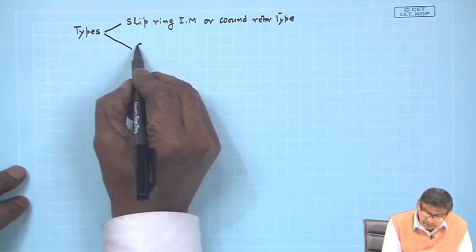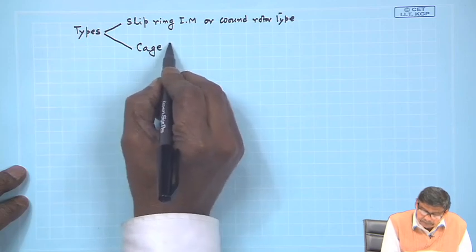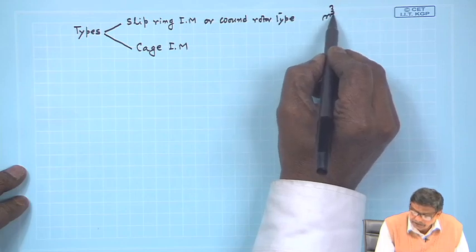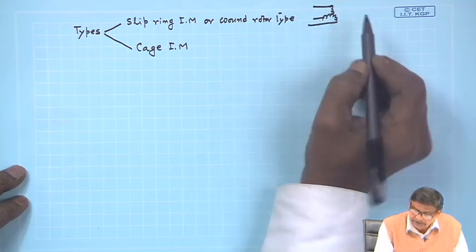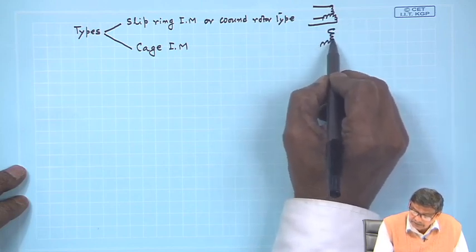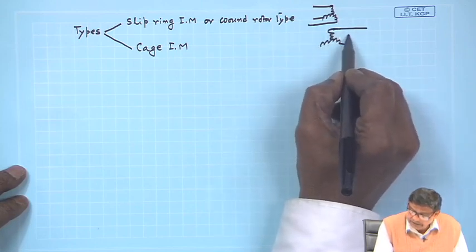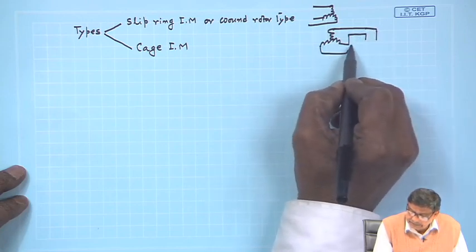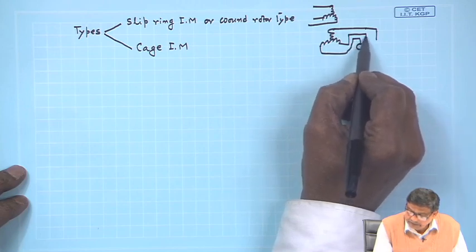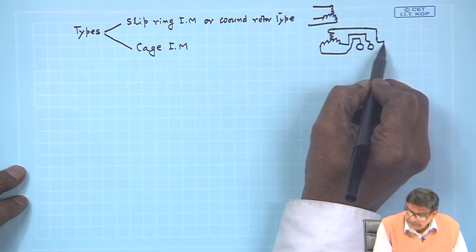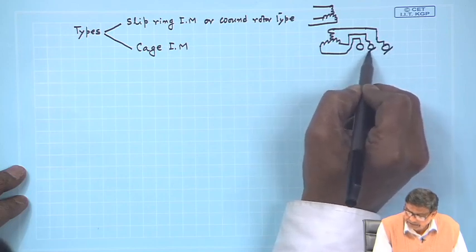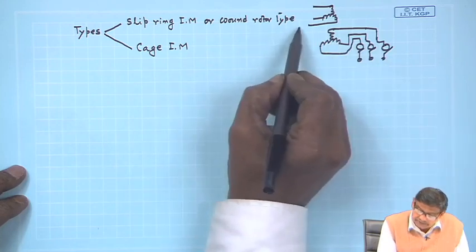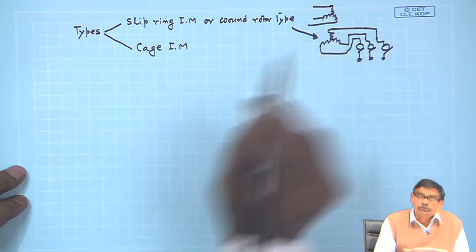Another type is the cage induction motor. For the wound rotor induction motor, it will be represented with three-phase winding on the stator, three-phase winding on the rotor, and these terminals are terminated in copper rings which rotate. Fixed brushes are shown by lines, and these are the rotor terminals. This is the slip ring or wound rotor induction motor.